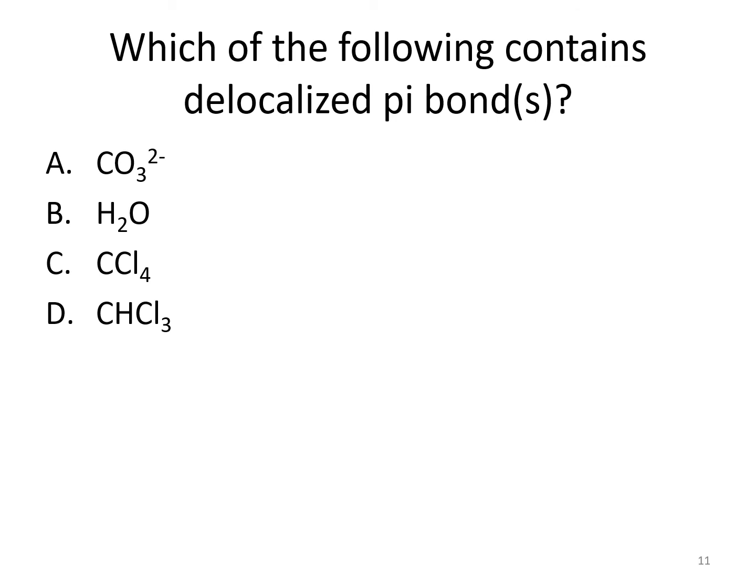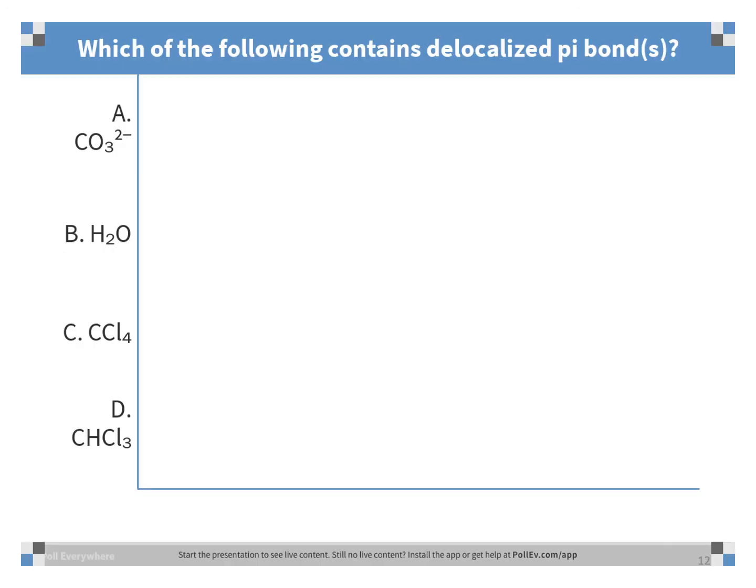Which of the following contains delocalized pi bonds? Is it A, the carbonate ion; B, water; C, carbon tetrachloride; or D, CHCl3? The correct answer is A, the carbonate ion. For a molecule to have pi bonding at all, it must have double or triple bonds. Answer choices B through D have only single bonds and therefore only have sigma bonds — they cannot have delocalized pi bonds. The carbonate ion not only has a pi bond, but that pi bond can be in different places around the molecule depending on which resonance structure is drawn. Anytime a molecule has multiple resonance structures, it has delocalized pi bonding.